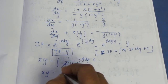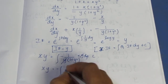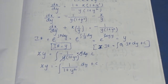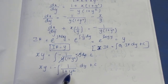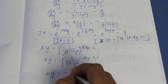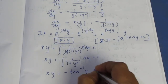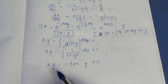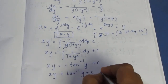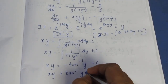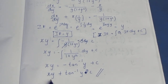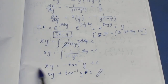So xy equals integration of minus 1 by (1 + y²) dy. Using the formula, integration of 1 by (1 + x²) is tan inverse x, so here we get tan inverse y. Therefore xy equals minus tan inverse y plus c, which gives xy plus tan inverse y equal to c. This is the solution of the differential equation.